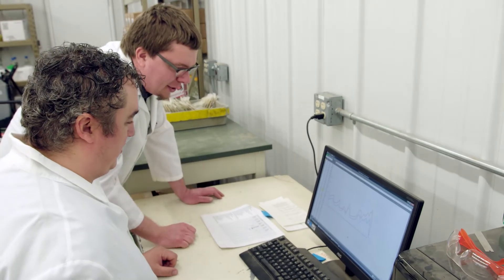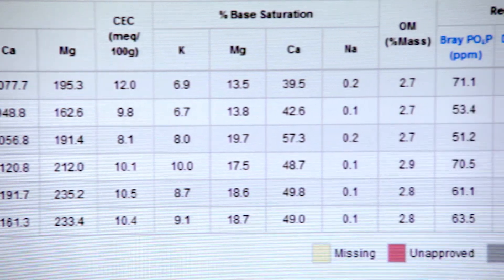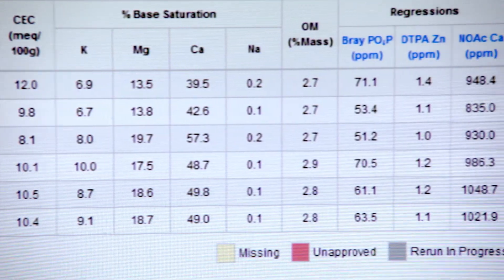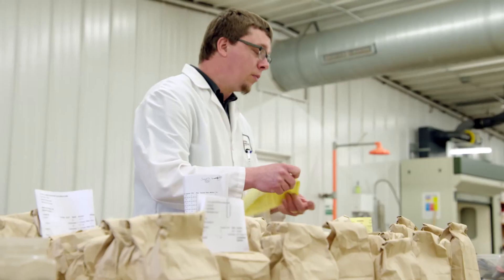When determining how much nutrients to apply, use information and data collected from your state or your region — make sure it's locally relevant. And instead of looking at single data points, look at the trends over time between yields and soil test results. They will be able to do much better management.